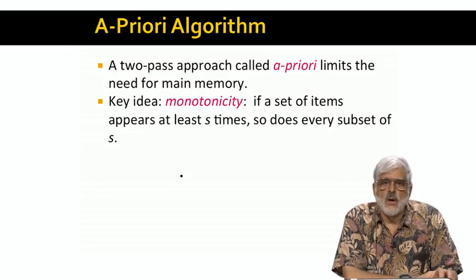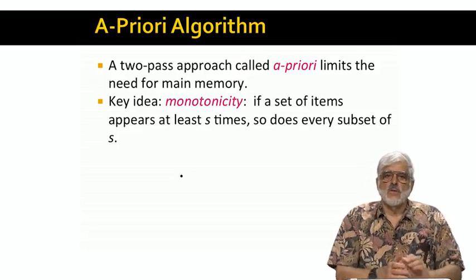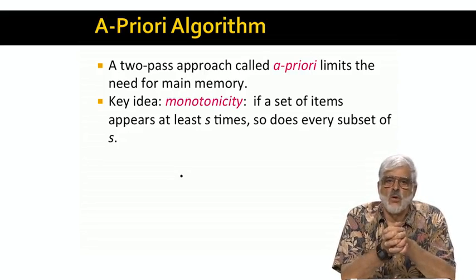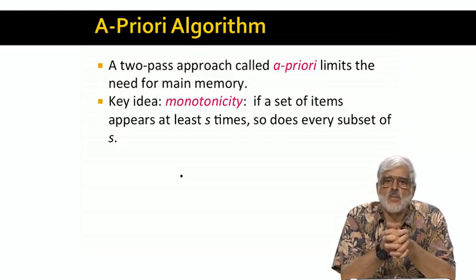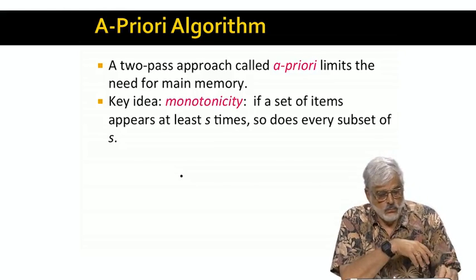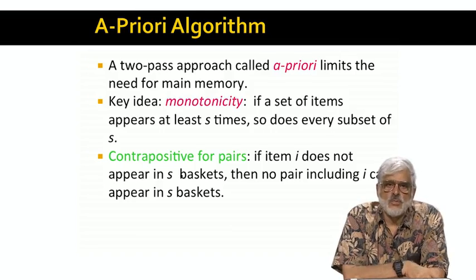The monotonicity property, which A-Priori exploits, says that if a set of items appears in at least s baskets, then so does each of its subsets. That should be obvious, since there are s baskets that contain all members of the set. So surely these s baskets also contain any of its subsets. And there may be more baskets that contain the subset, but not the full set.